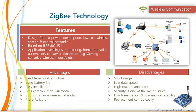ZigBee technology is designed for low power consumption, low cost wireless sensors and control networks. It is based on IEEE 802.15.4. This technology is used in commercial applications like sensing and monitoring, home and industrial automation, and consumer electronics like gaming consoles and wireless mice. ZigBee advantages include a flexible network structure, easy installation, lower complexity than Bluetooth, very long battery life, support for a large number of nodes, and more reliability. Disadvantages include short range, low data speed, high maintenance cost, security issues, low transmission, low network stability, and costly equipment replacement.